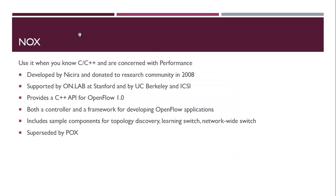Knox is C++ based and you should use it if you want to develop SDN-based applications and you are good at C++, especially in the area of networking. It performs very well — Knox has significantly better performance compared to Pox, so if performance is a priority you should go for Knox. It was developed by Nick Kera and donated to the research community, supported by OnLab, though support from Stanford forums was limited.